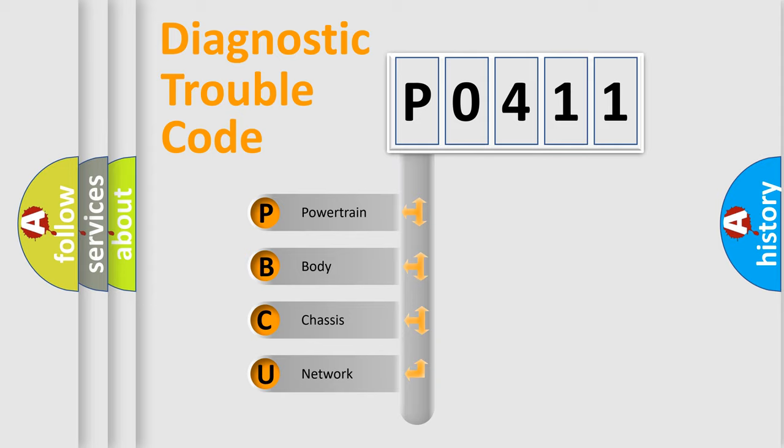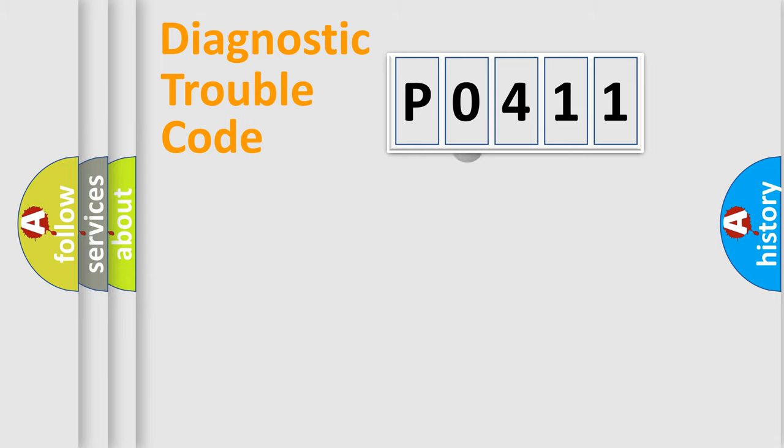We divide the electric system of automobile into four basic units: Powertrain, Body, Chassis, Network. This distribution is defined in the first character code.